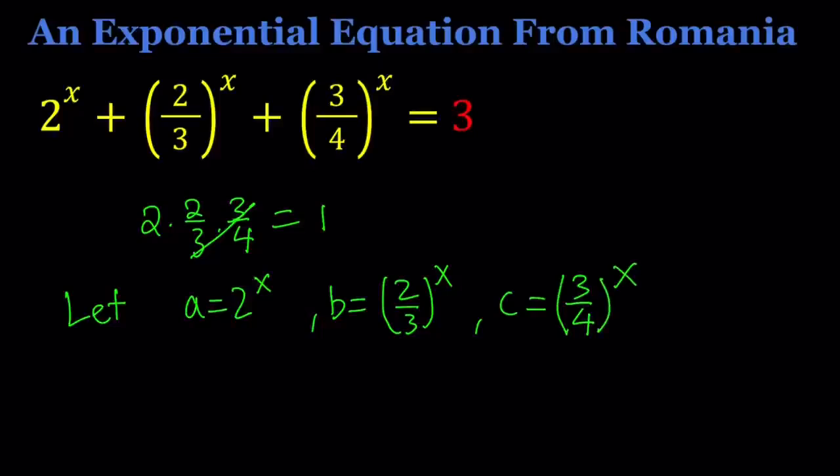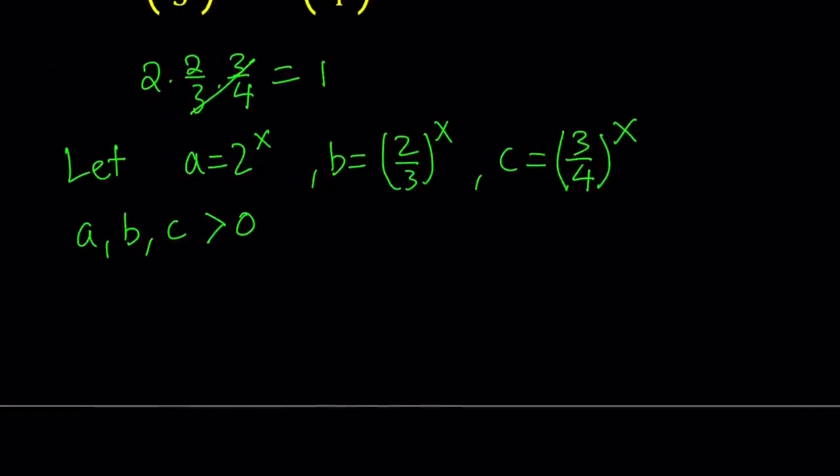Notice that these are exponentials with positive bases, therefore a, b, c are all greater than 0. And since a, b, c are all positive, then we can basically apply what is called the AM-GM inequality. I'll talk about that. AM-GM inequality applies.